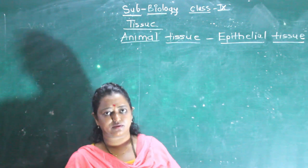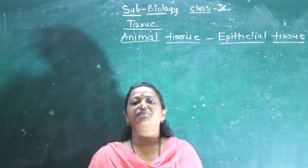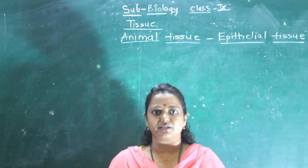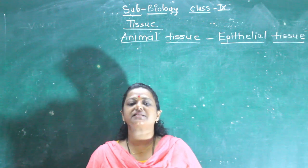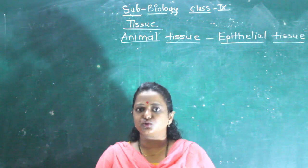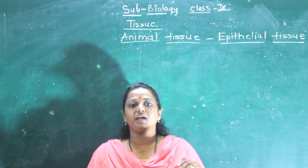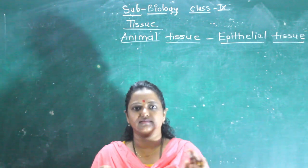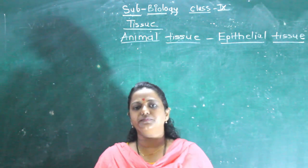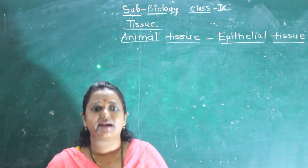Today we will see another type of epithelial tissue called cuboidal epithelial tissue, also known as glandular epithelial tissue. 'Cuboidal' means it is cube-shaped. It is also called glandular epithelial tissue because various glands secrete their secretions through these tissues — the glands are made from this tissue and appear cube-shaped or bulky in nature.